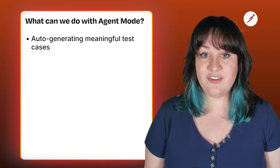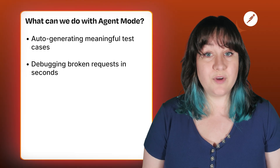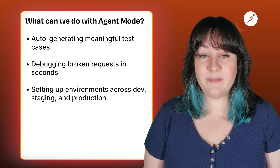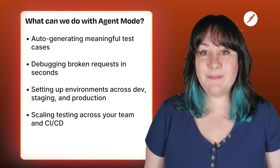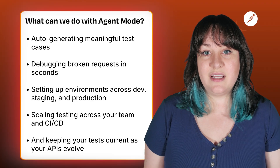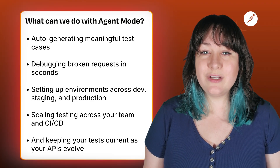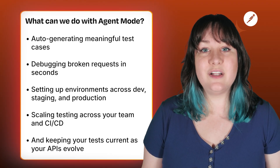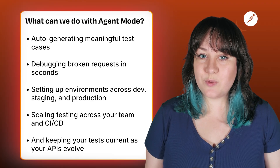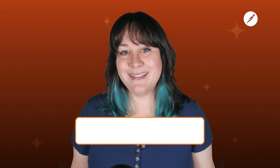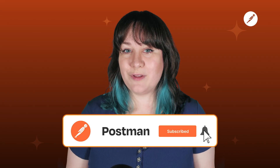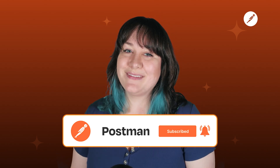To recap what we covered: auto-generating meaningful test cases, debugging broken requests in seconds, setting up environments across dev, staging, and production, scaling testing across your team and CI/CD, and keeping your tests current as your APIs evolve. If you haven't tried Agent Mode yet, you're going to be amazed by the time it saves you. It's available in Postman right now, so give it a try. Drop a comment below — I'd love to hear what you think. If this was helpful, hit that like button and subscribe for more Postman tips and API workflow breakdowns. I'm Melinda, thanks for watching, and I'll see you in the next one.